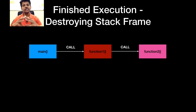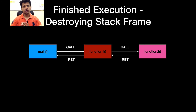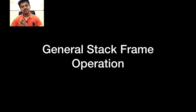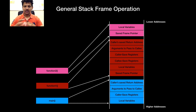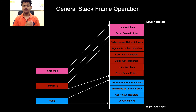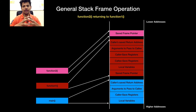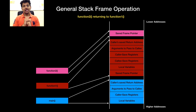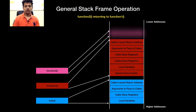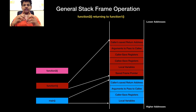When function 2 finishes its execution, it returns to function 1. And when function 1 finishes its execution, it returns to main. This is our stack — as we saw in the cdecl video, the caller is responsible for cleaning its own stack frame. Now function 2 is returning to function 1. First, it will clear its local variables. After that, the saved frame pointer will be put into EBP. Using the caller's saved return address, function 2 will return to function 1, and the caller's saved return address will be put into EIP.